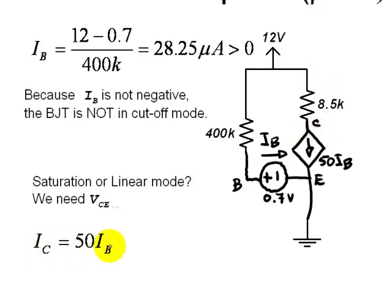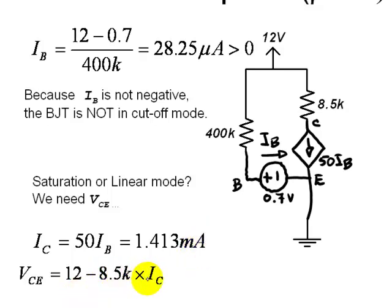The current in the collector is 50 times IB, which is 1.4mA, same as in the previous exercise. The drop will be 8.5kΩ times that current, subtracted from the voltage at the top node. And that tells us that the voltage C, which is VCE, is negative 6.25mV.